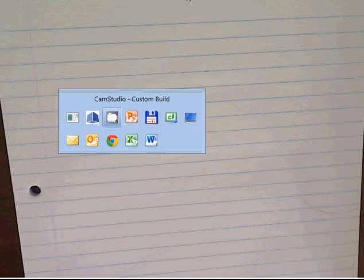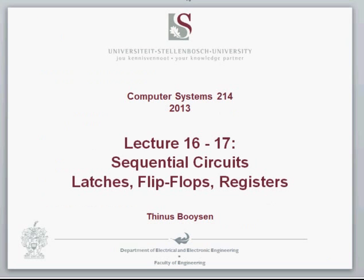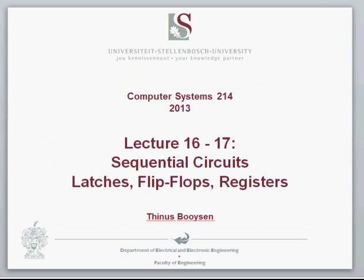Today we're going to look at flip-flops and latches — there are only six units you need to know. Before going through each one, it's important to explicitly state the difference between all the work we've done up to now and this. All the work done up to now is called combinational logic, meaning the output is only dependent on the inputs. When you work with flip-flops and latches, you have something called sequential logic, where the output is not dependent only on the inputs anymore.